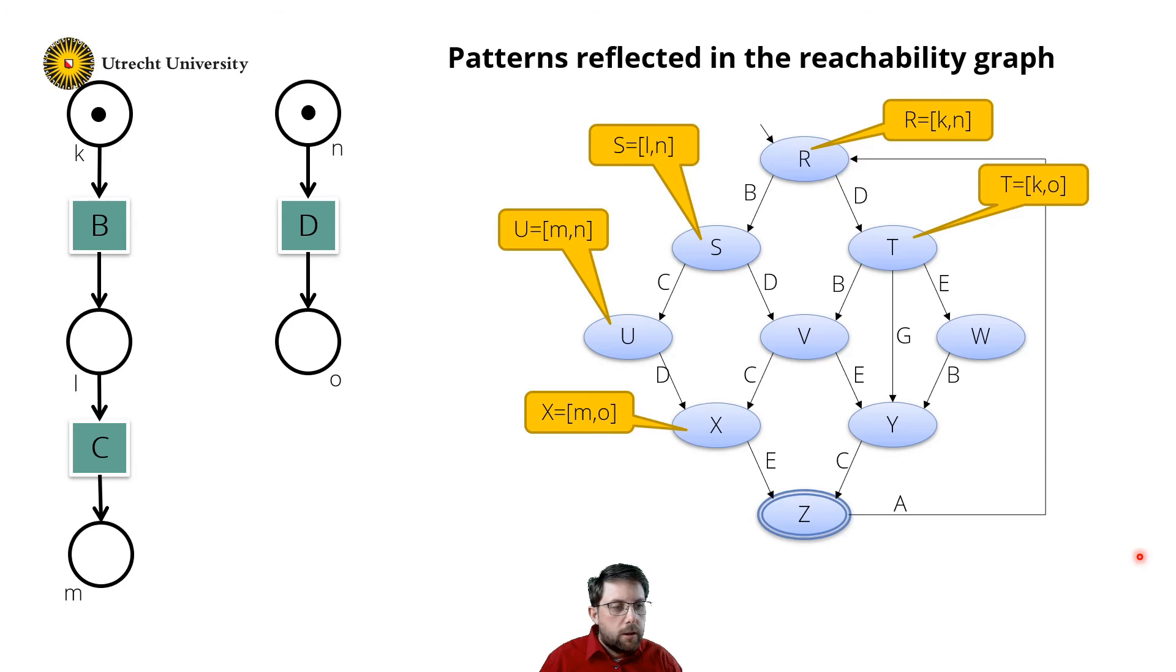So I also observe that this E always happens after D. So that means that transition E needs to be in sequence with transition D, and concurrent with transitions B. And I also note that it is concurrent to C, as here I have diamonds with C and E.